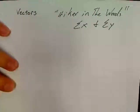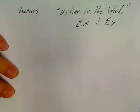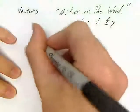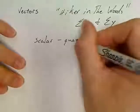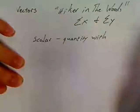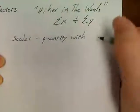But the key thing is a vector. Let's first take a look at the difference between what a vector quantity is and what a scalar quantity is. A scalar has magnitude.